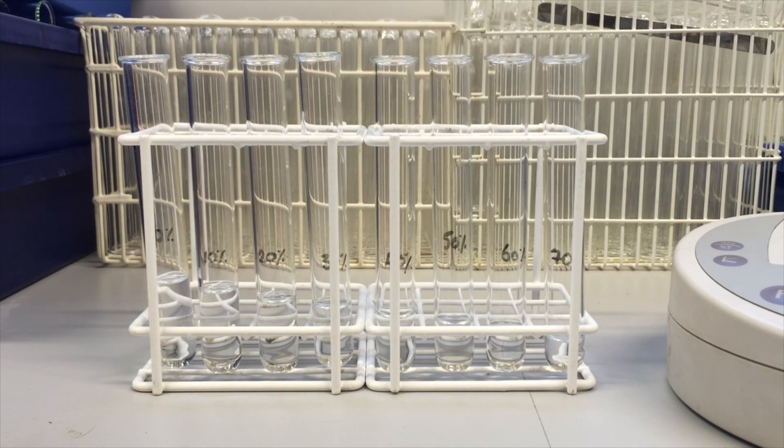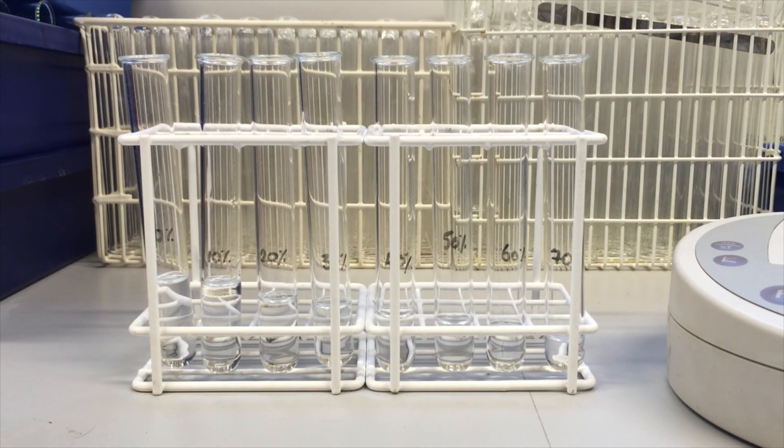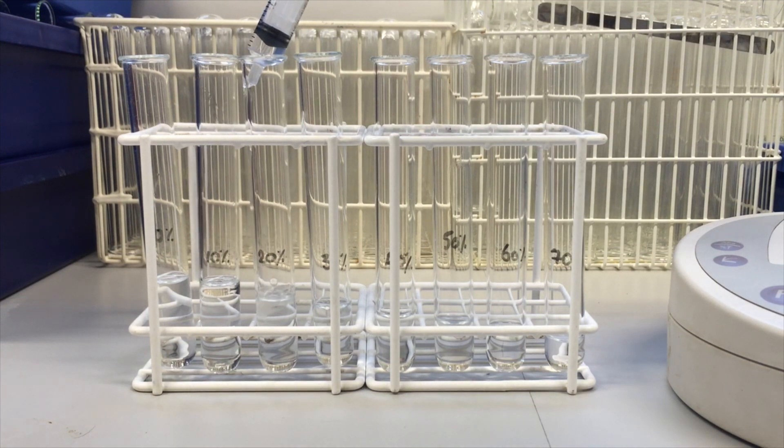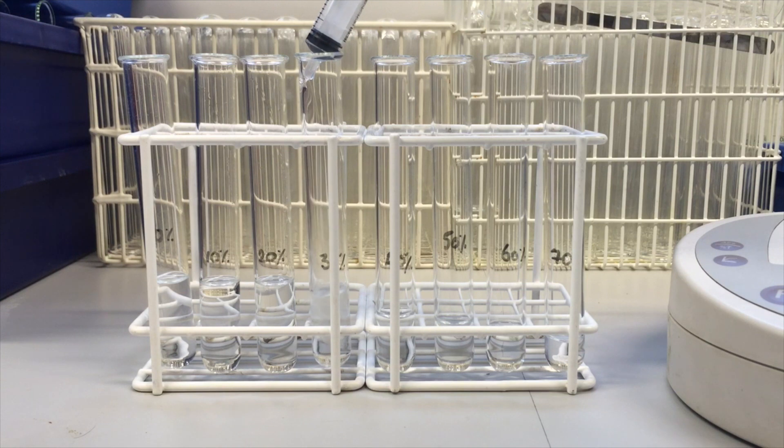So starting with the 10%. So if I want 10% of alcohol or ethanol in the tube with a final volume of five, then I'm adding 0.5 ml of alcohol into there. And for 20% I'm adding 1 cm cubed. For 30, I'm adding 1.5.